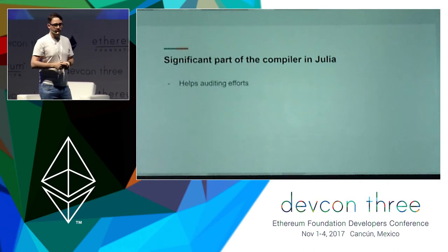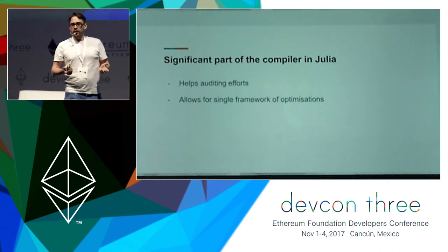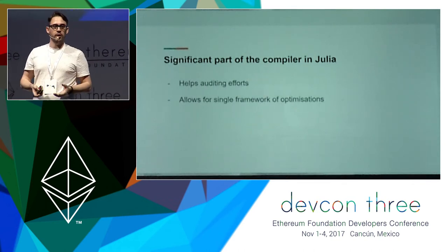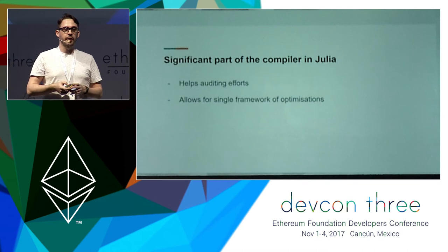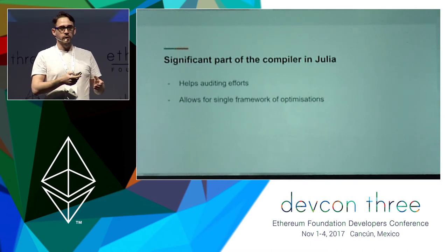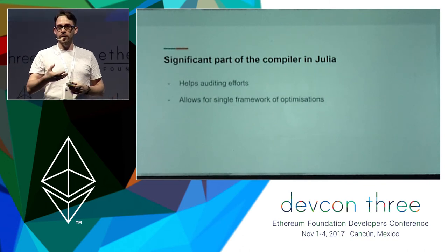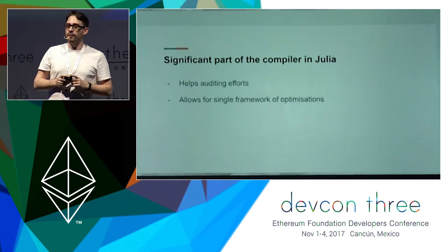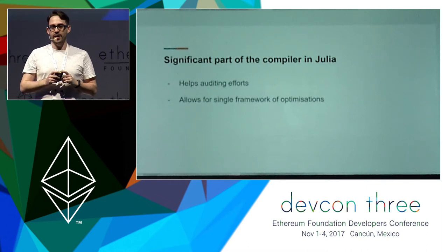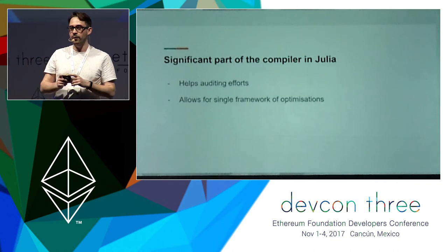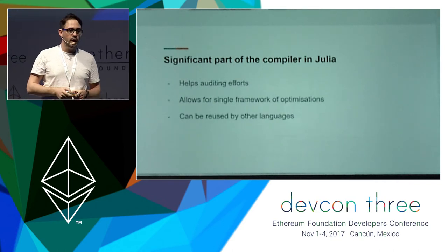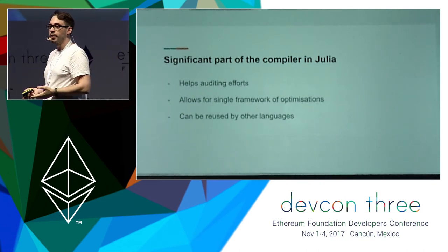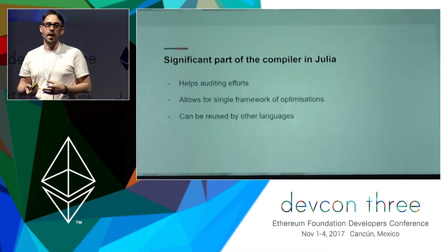It also allows a simple framework for optimizations, because you will just optimize Julia code. Right now, if you want to optimize contracts, you also have to do optimization steps in the Solidity part before it gets converted to EVM — and in fact we only have one single tiny simple optimization step in Solidity; everything else is in EVM. And if we have all these helpers written in Julia and they are verified, they could be used by other languages in the ecosystem as well.